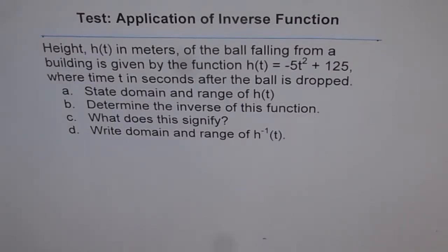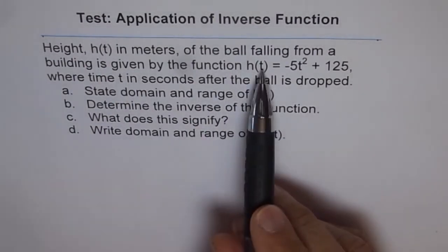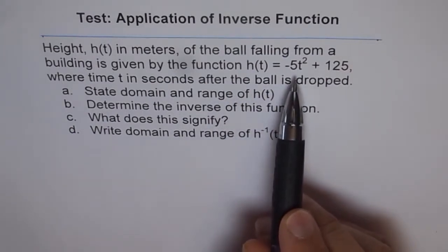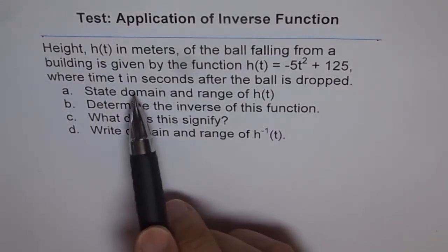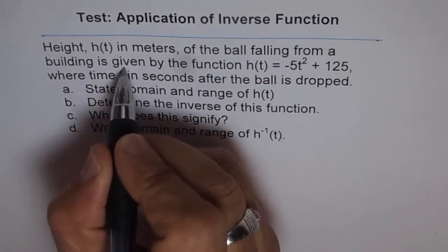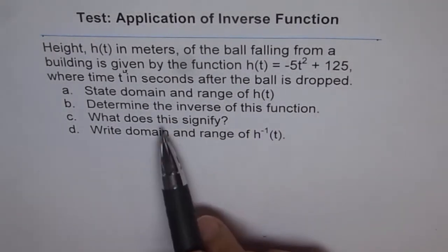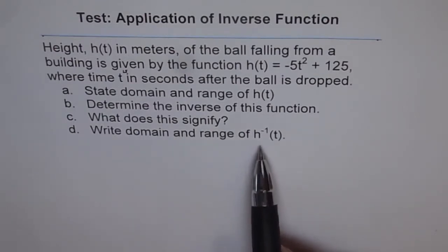Here is a very important application problem of inverse functions. I have always seen this kind of problem in tests. Please go through it very carefully and try to do this question on your own. The height h(t) in meters of a ball falling from a building is given by h(t) = -5t² + 125, where time t is in seconds after the ball is dropped. State the domain and range of h(t), determine the inverse of this function, what does it signify, and write the domain and range of h inverse.